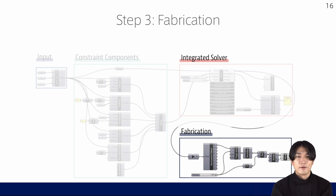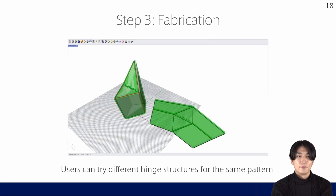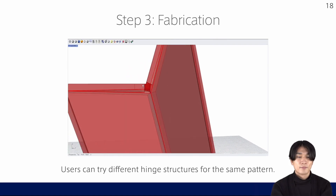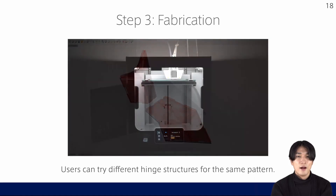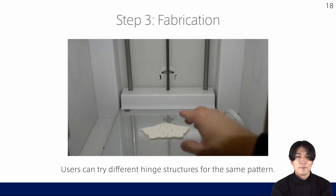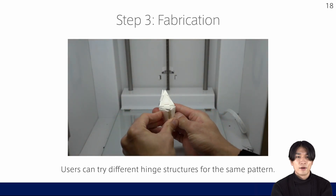Finally, the user finalizes the pattern for fabrication. Our system allows for five fabrication methods, with which the system assigns the hinges considering the thickness, folding angle, and fabrication tool. For example, this is the finger joint, which is suitable for CNC milling. And this is the single hinge structure, suitable for 3D printing. Once the user is satisfied with the 3D printed prototype, they can proceed to larger fabrication with the same model but with a different hinge structure.